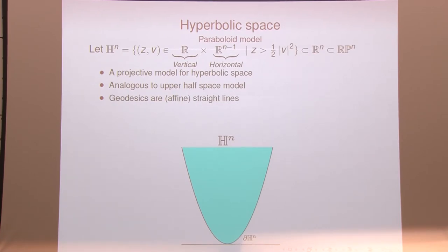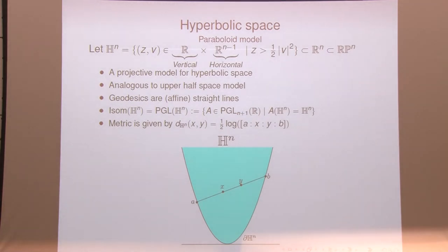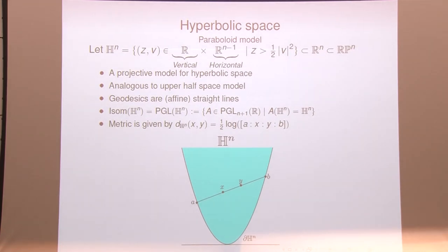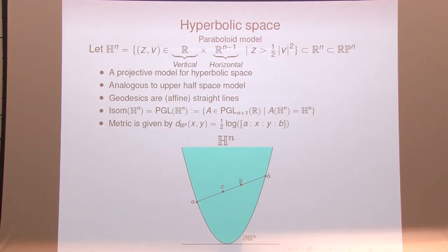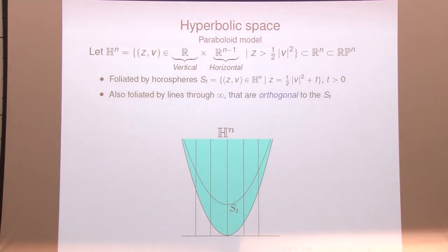In this model, because it's a projective model, geodesics are just straight affine lines. The isometry group of hyperbolic space corresponds to all the projective maps that preserve this picture. It has a nice metric called the Hilbert metric: to decide the distance between two points, you draw the straight line between them, look at where it intersects the boundary to get four points on a projective line, and take one-half the log of the cross ratio. In this setting, we get a codimension-one foliation by strictly convex hypersurfaces called horospheres, which are just level sets of the convex function described above. There's also a secondary foliation by vertical lines, which in hyperbolic geometry are orthogonal.